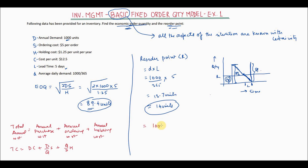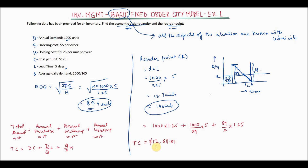Calculating: 1000 × 12.5 plus 1000/89 × 5 plus 89/2 × 1.25. This comes out to $12,611.81. So the total annual cost for this inventory is $12,611.81.